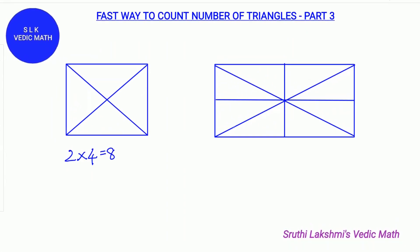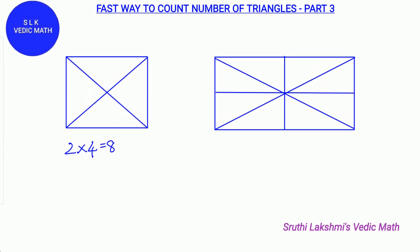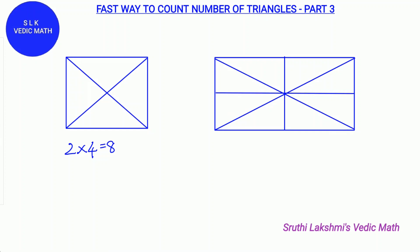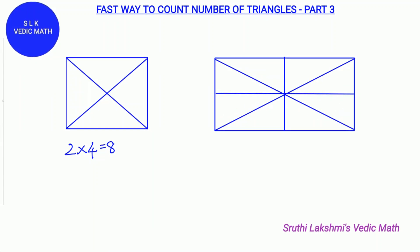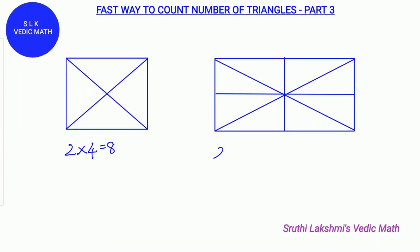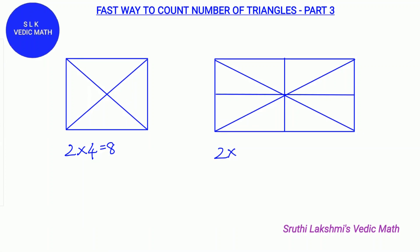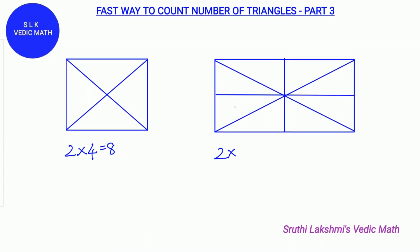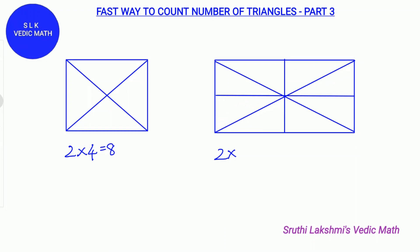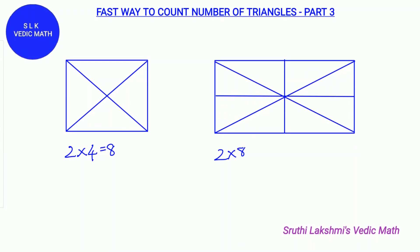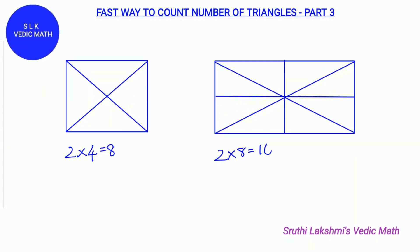Let's see for this rectangle. There are two diagonals, 1 and 2. And there are 8 parts: 1, 2, 3, 4, 5, 6, 7 and 8. So we multiply 2 into 8 which gives us 16.